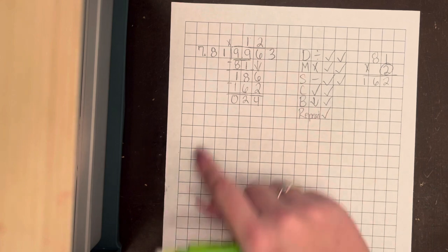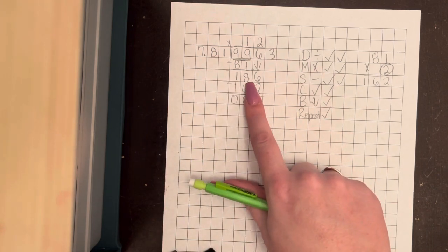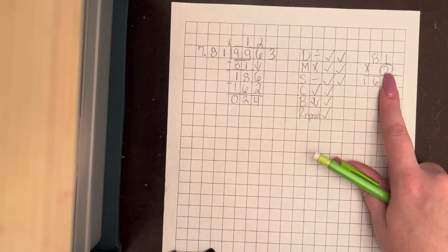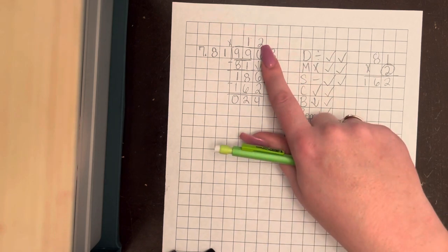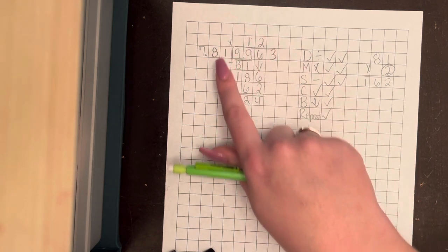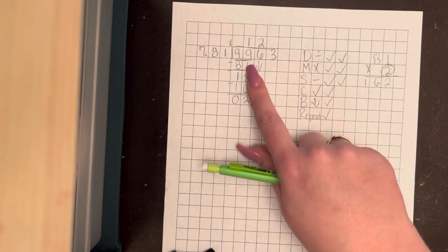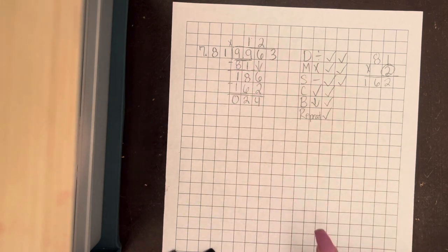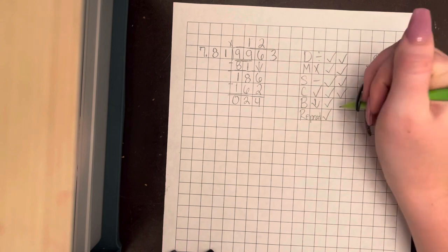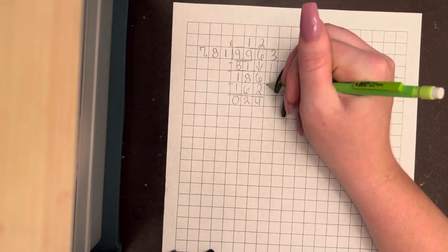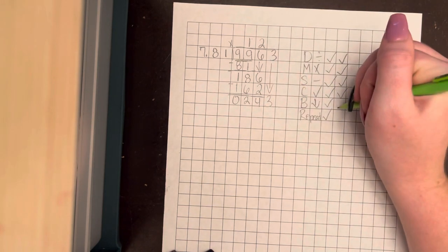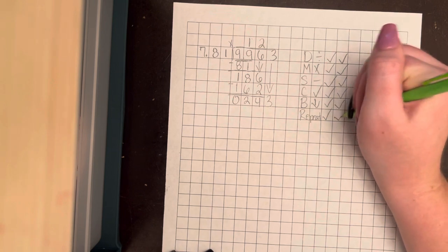So now we check. 81 into 186. We tried 2 times, which is 162. So we put the 2 on top. 2 times 81, 162. We subtracted. 6 minus 2 is 4. 8 minus 6 is 2. And 1 minus 1 is 0. We're good. Now we've got to bring down again. Because we still have numbers left. And now it's time to repeat.